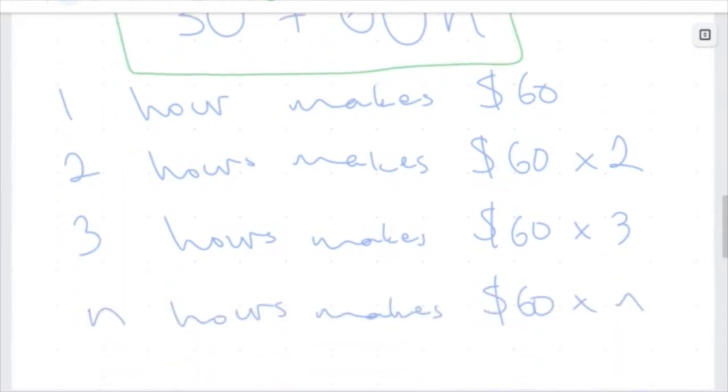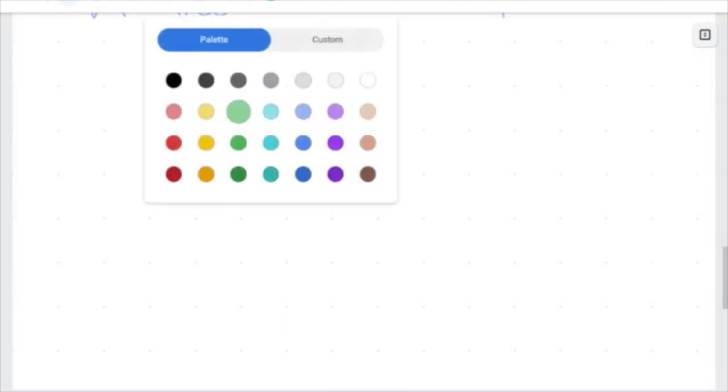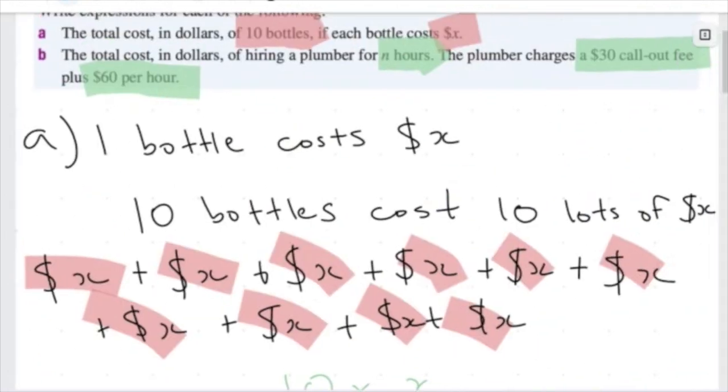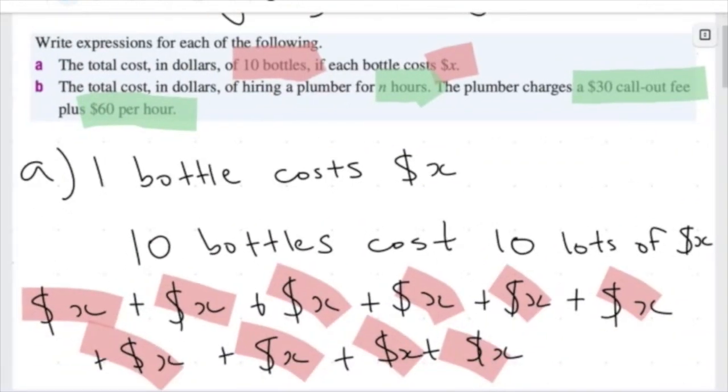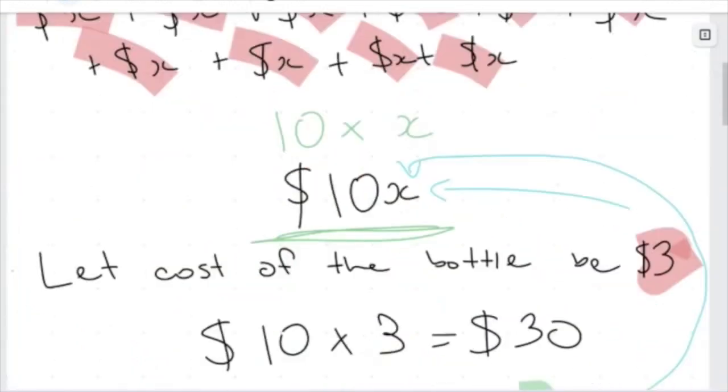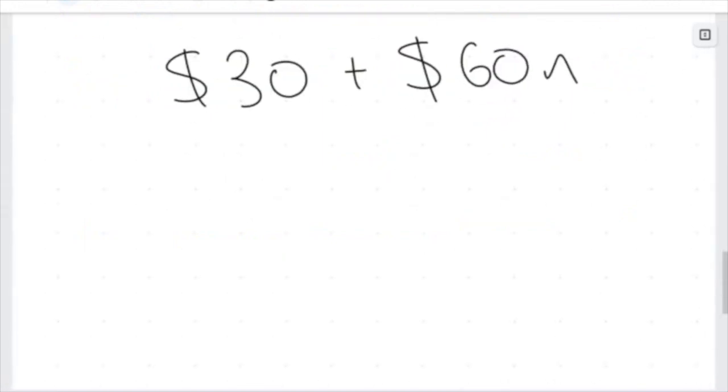So our expression becomes $30. Now we've written this expression, but I'm just going to write it again here. It's going to be $30 plus $60 times N dollars here. This is our expression. So we've taken all of these words, total cost in dollars of hiring a plumber for N hours, the plumber charges a $30 call-out fee plus $60 per hour. We've written this as an expression, and we can find how much the plumber makes for different numbers of hours worked, so for different values of N.